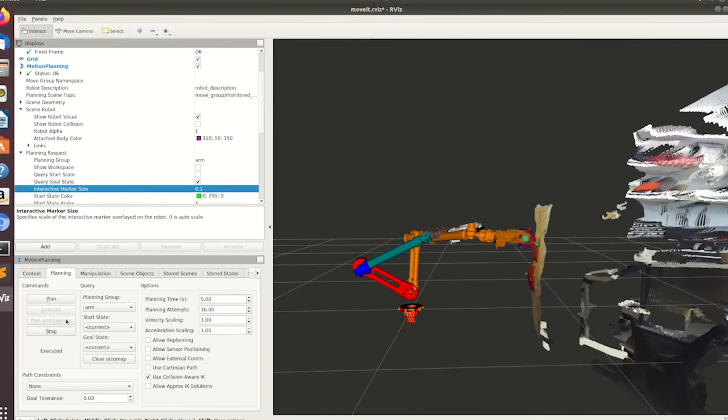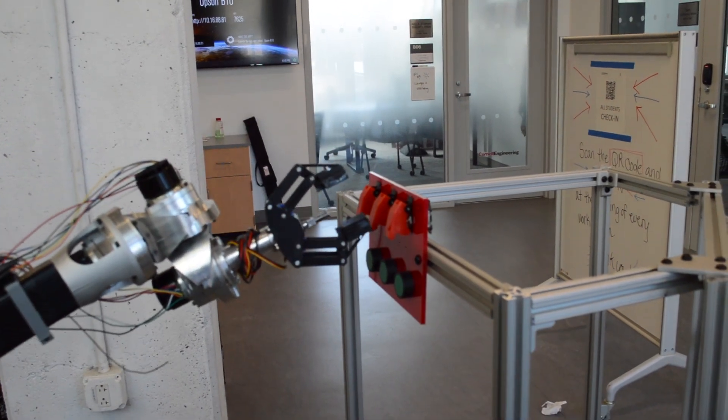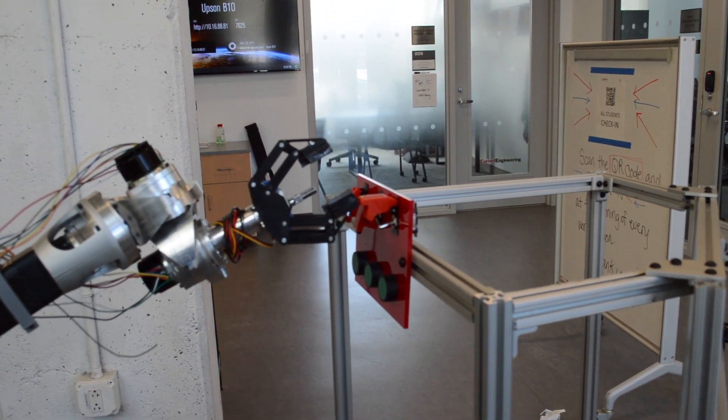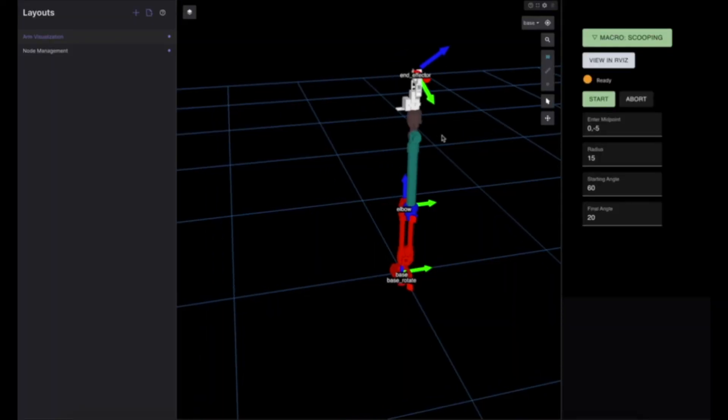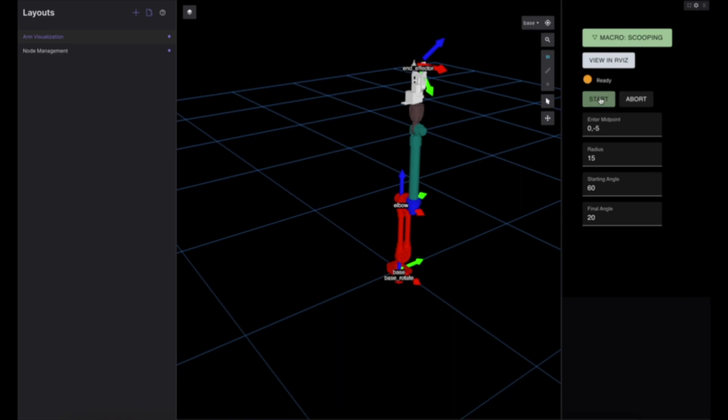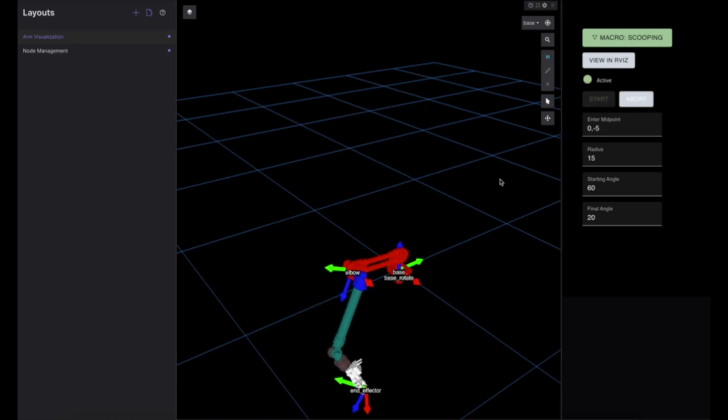Our inverse kinematics implementation allows operators to manipulate the arm in a 3D rendering of its surroundings. We've also included some predefined arm macros, such as a scooping action, to further improve the arm's ease of operability. We also completely redesigned our graphical user interface to enable full control of the rover and all its features. Among its many capabilities are rover module management, autonomous navigation control on a map, and arm manipulation.